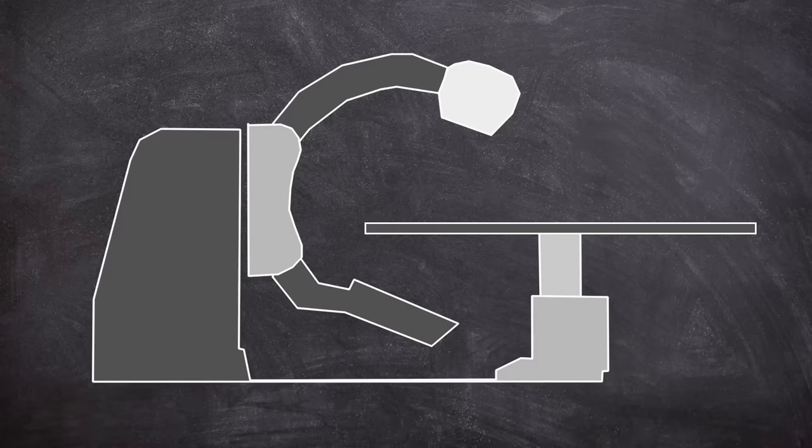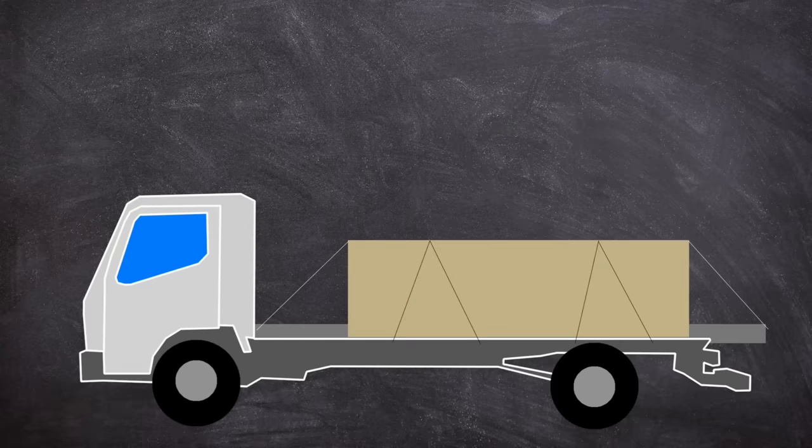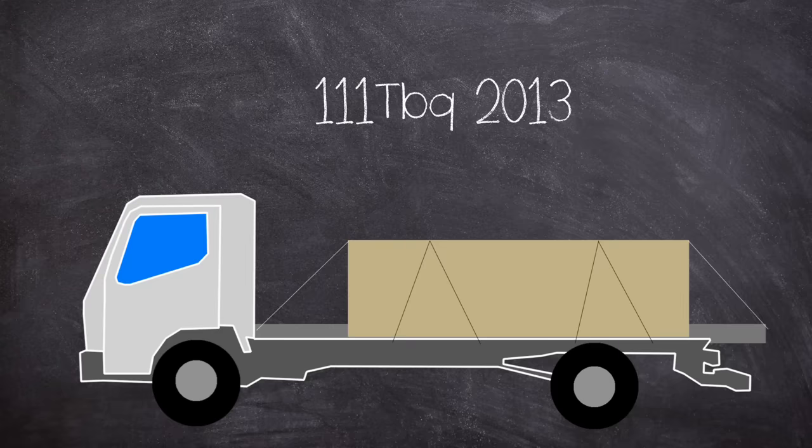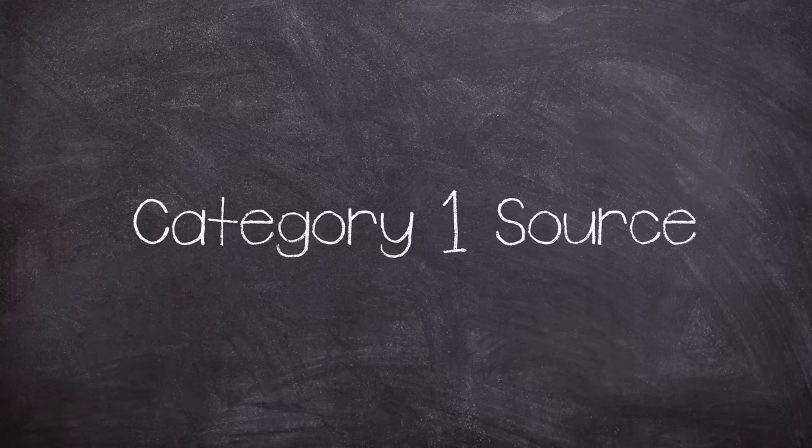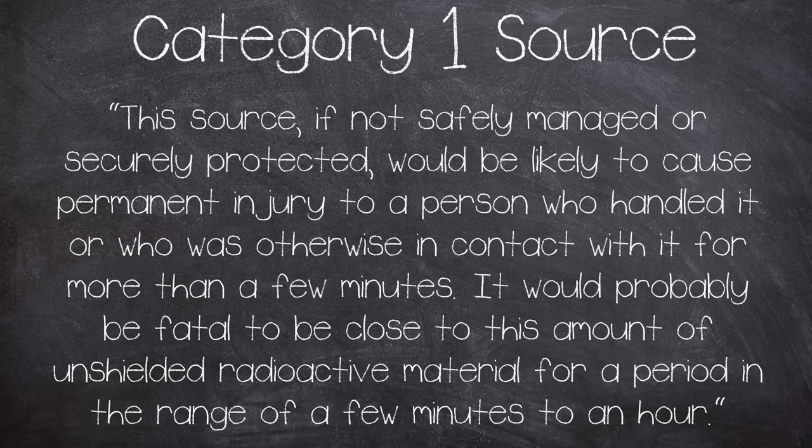This would be the fate of one such teletherapy machine. Its head, which was where the cobalt-60 lived, was packed up and placed on a flatbed truck. It is at roughly a quarter of its radioactivity from 2002, when it was originally measured at 458 TBq. It is in 2013 low at roughly 100, but it is by no means safe. It is classed as a category 1 source, being described as: this source, if not safely managed or securely protected, would be likely to cause permanent injury to a person who handled it or who was otherwise in contact with it for more than a few minutes.